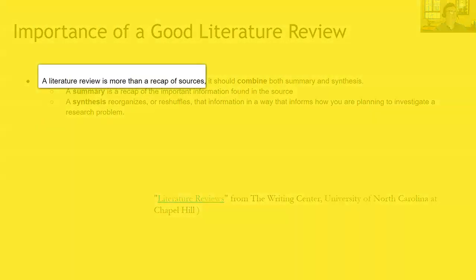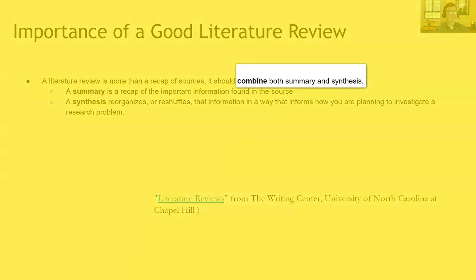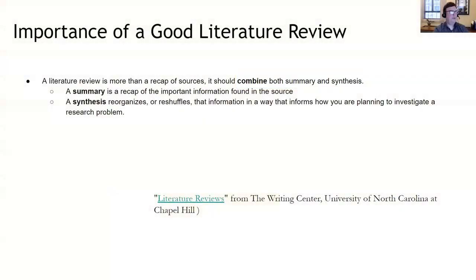Importance of a good literature review: it's more than a recap of sources. If it was just a recap of sources and summarizing things, you might as well write an annotated bibliography. What a good literature review does is combine both summary and synthesis. A summary is a recap of the important information found in the source — the key points being presented. It doesn't mean summarizing every point in the article or book. It's more so what is most important — otherwise you'll write long summaries that take up too much room and leave no space for your paper itself.